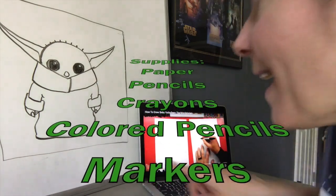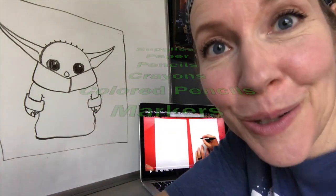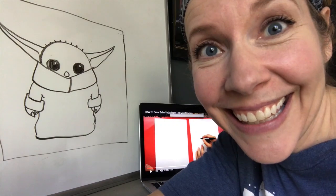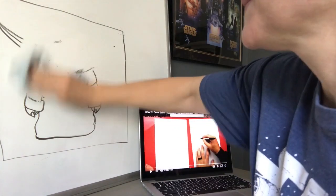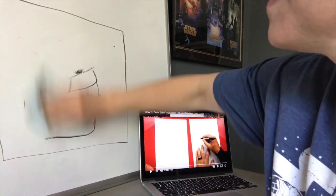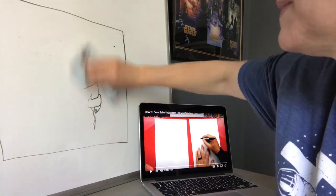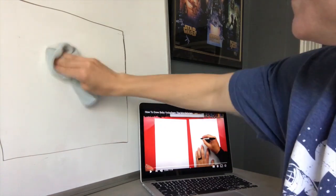And I'm gonna be drawing on this whiteboard and I'll show you how to do it. We can do it together. Alright, get your paper, pencils, colored pencils, crayons, and markers ready to go. And we'll get started and work on it together.